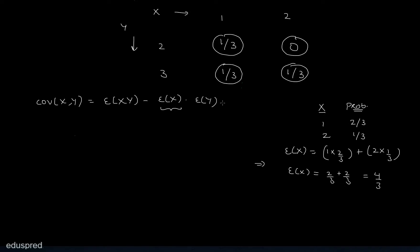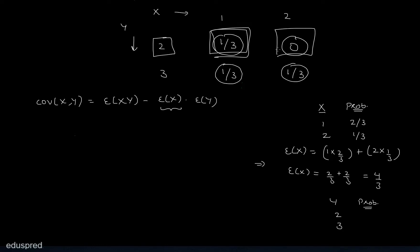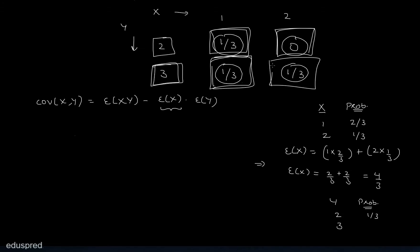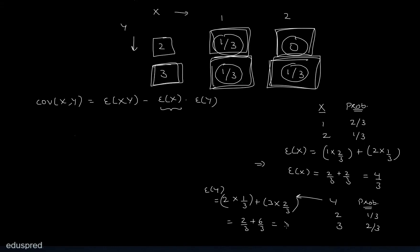Similarly, we can find E(Y). The possible values of Y are 2 and 3. Summing across X: P(Y=2) = 1/3 + 0 = 1/3, and P(Y=3) = 1/3 + 1/3 = 2/3. Therefore, E(Y) = 2·(1/3) + 3·(2/3) = 2/3 + 6/3 = 8/3.